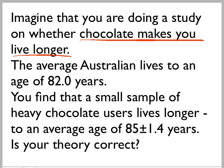The average Australian lives for 82 years, and we have got some data. We've taken a small sample of chocolate users, averaged them, calculated the uncertainty in some proper way, and we find that they live an average of 85 plus or minus 1.4 years.